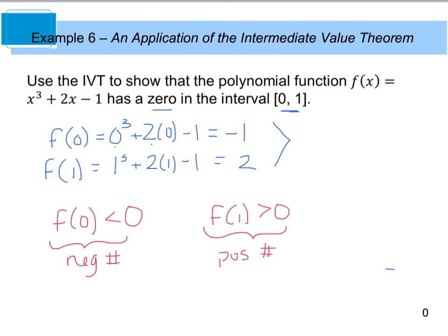So because I've changed signs from the beginning of my interval to the end of my interval, this is going to tell me that I have some value that's going to fall in between here that equals 0. So there is some value f(c) that's equal to 0. If you have questions on this, please make sure to ask me in class.